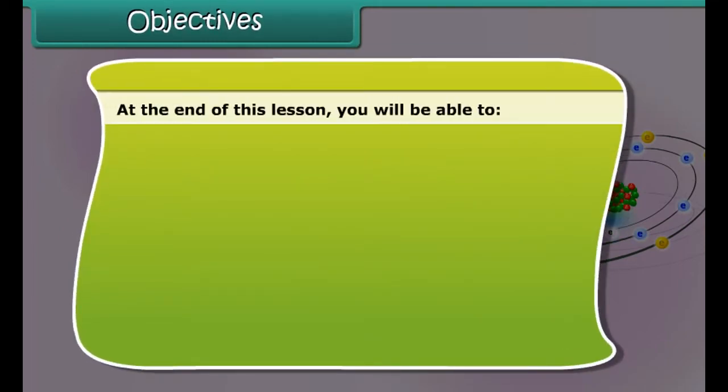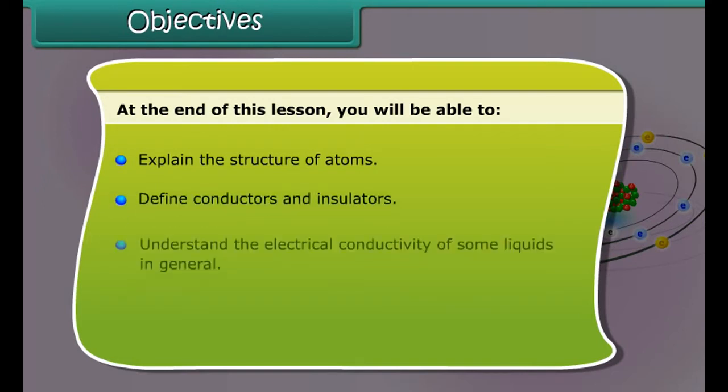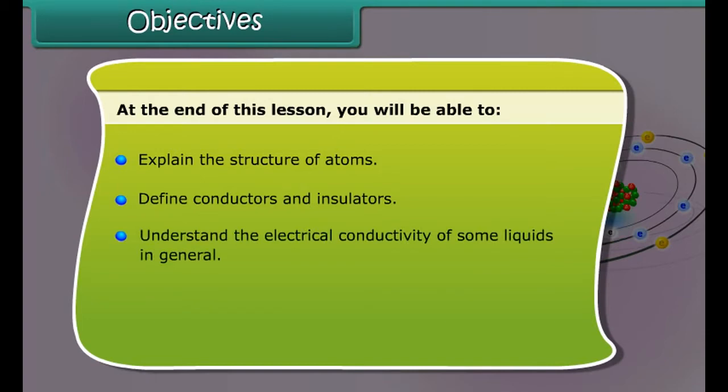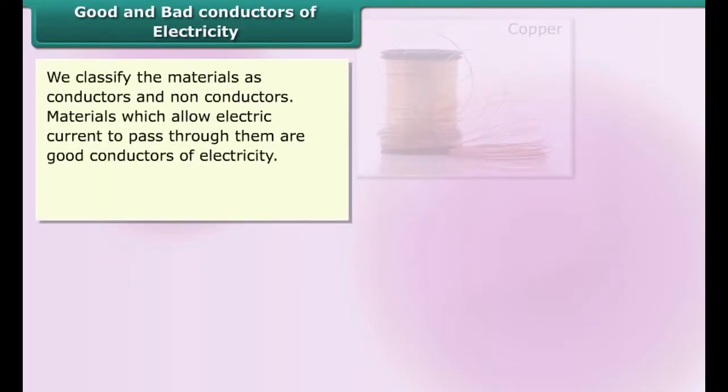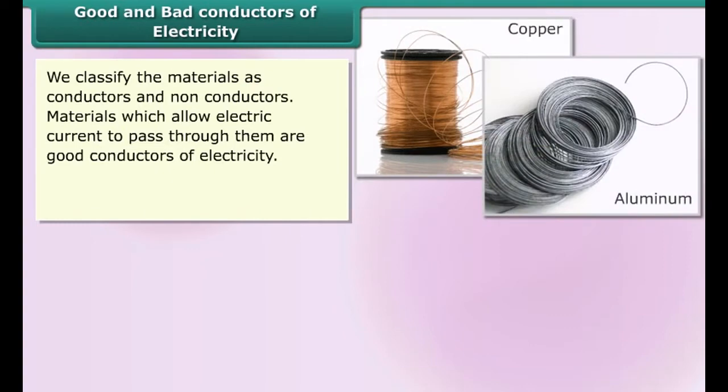Objectives: At the end of this lesson you'll be able to explain the structure of atoms, define conductors and insulators, understand the electrical conductivity of some liquids, identify the chemical effects of electric current, and list the uses of chemical effects such as electroplating.